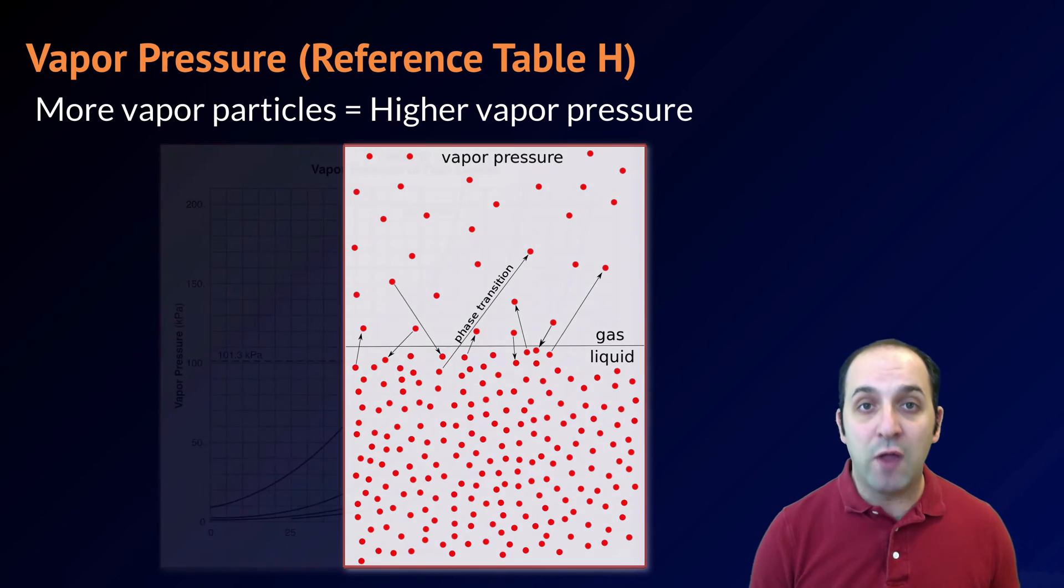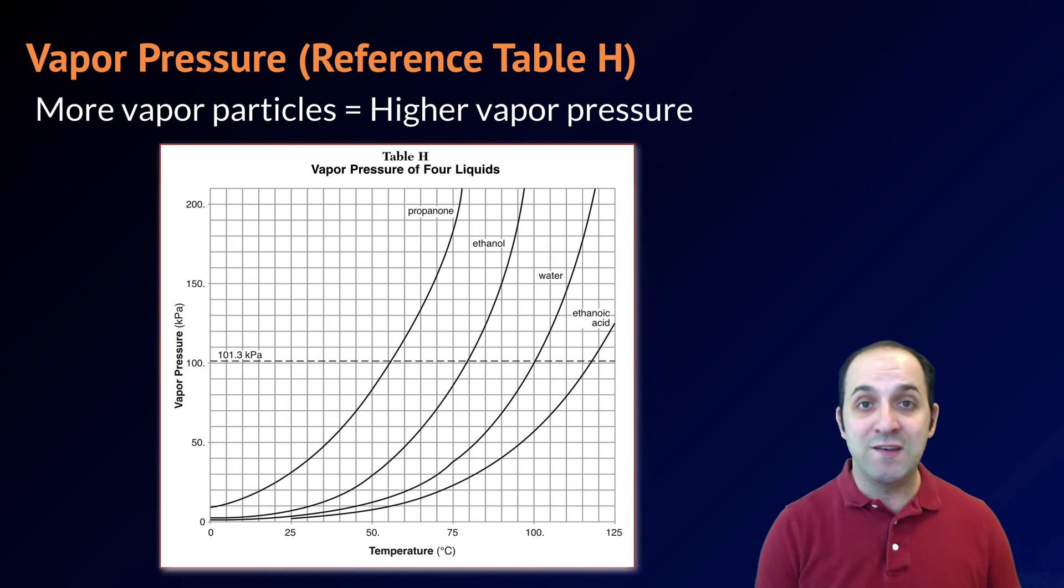We use reference table H to investigate the relationship between different liquids and their vapor pressures at particular temperatures. Reference table H is going to show us four different liquids: propanone, ethanol, water, and ethanoic acid. Each of these substances has a different vapor pressure.